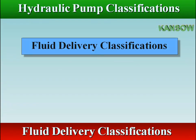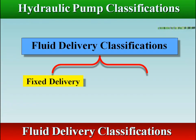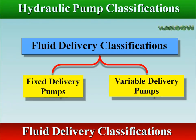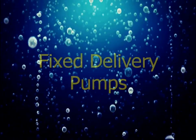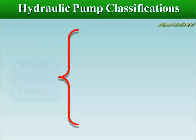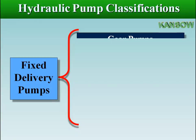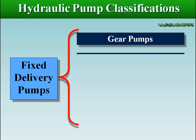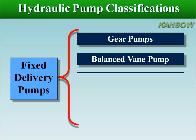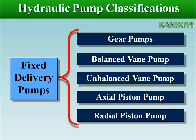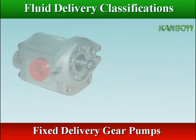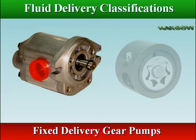Pistons are classified as either fixed or variable delivery. Fixed delivery pumps have pumping chambers with a volume that cannot be changed, so the output is the same during each cycle. All gear pumps are fixed delivery.